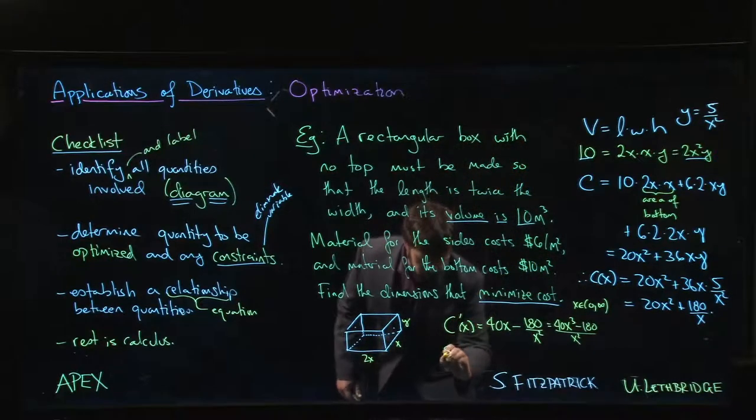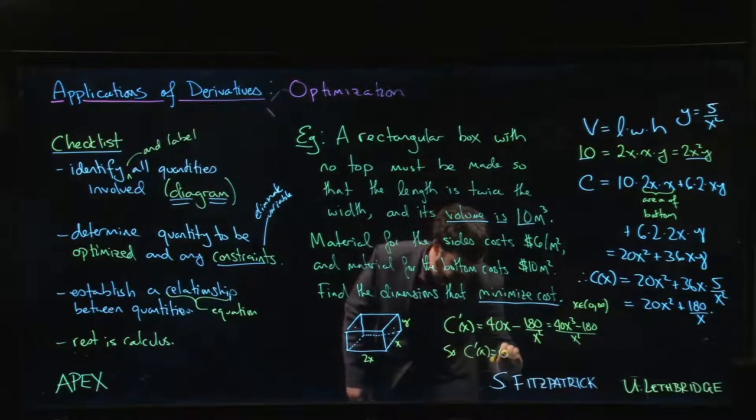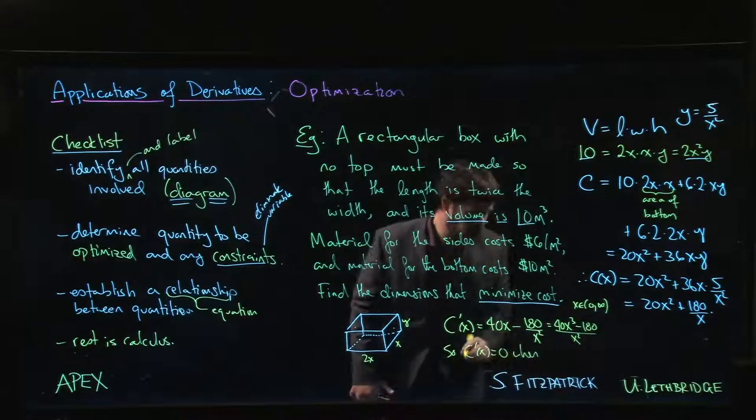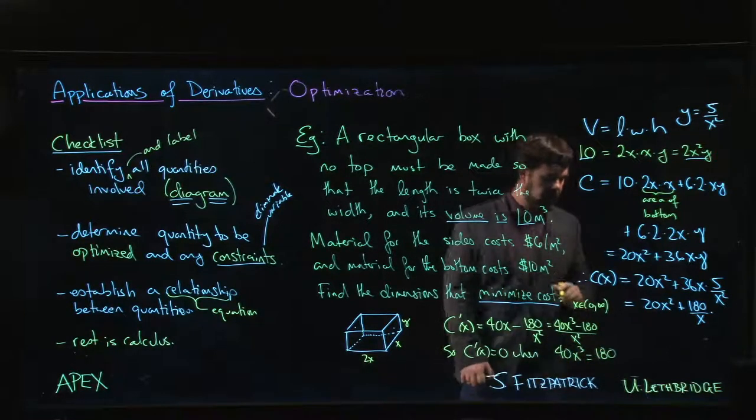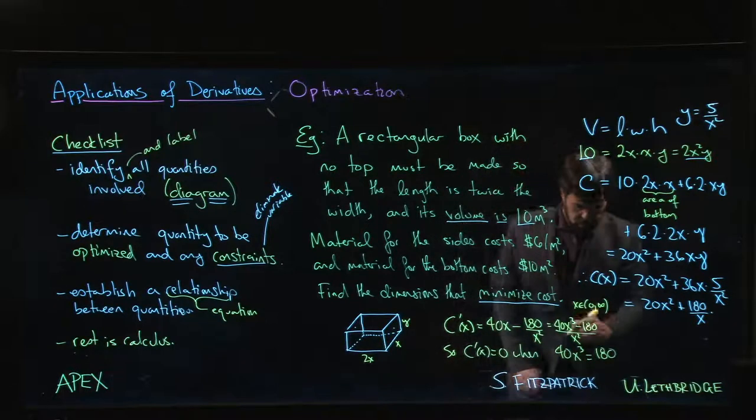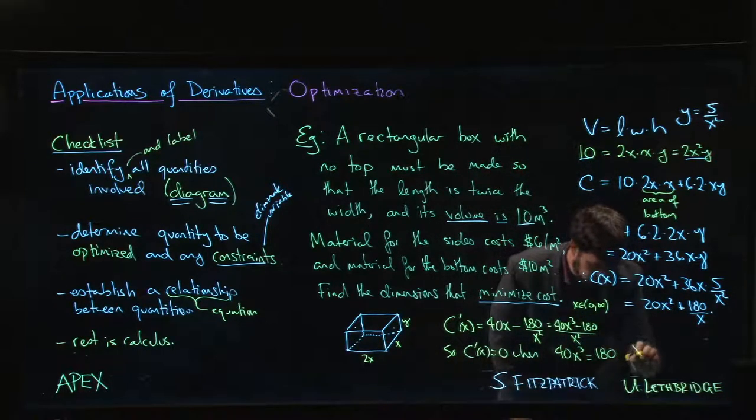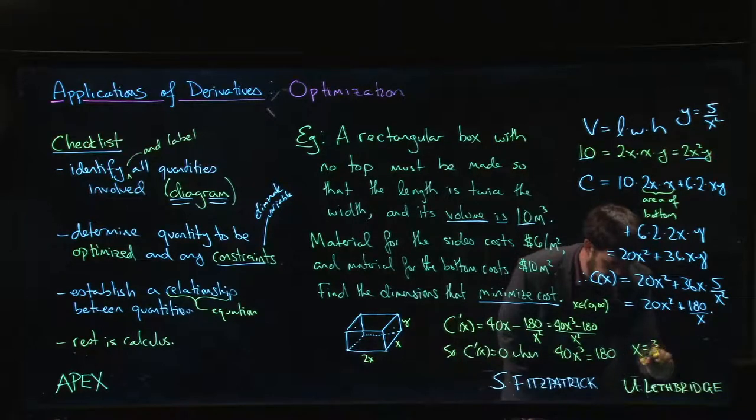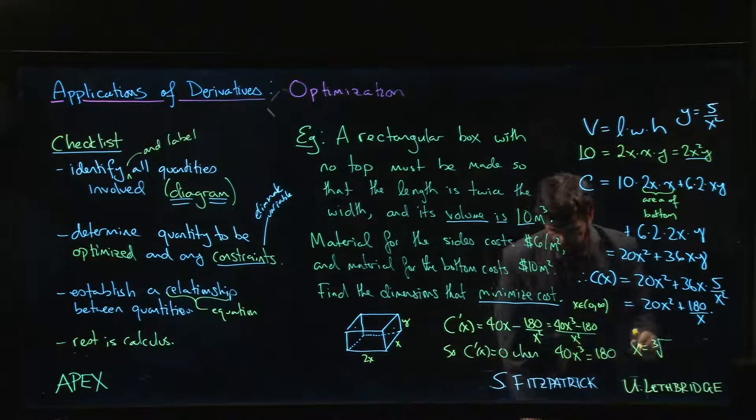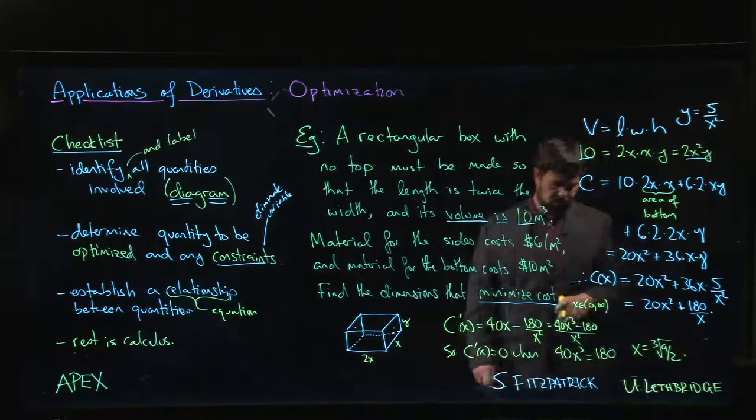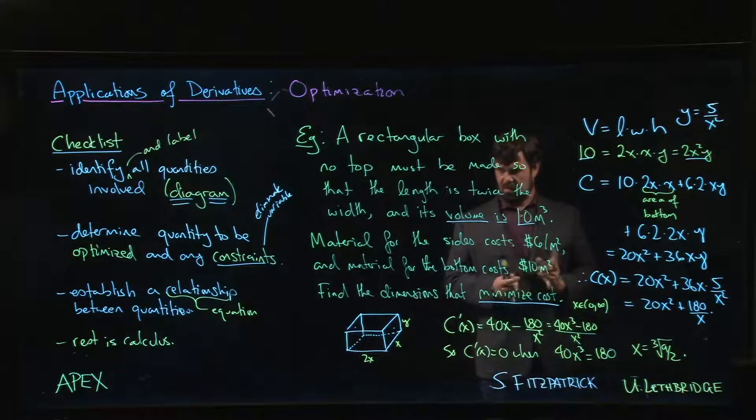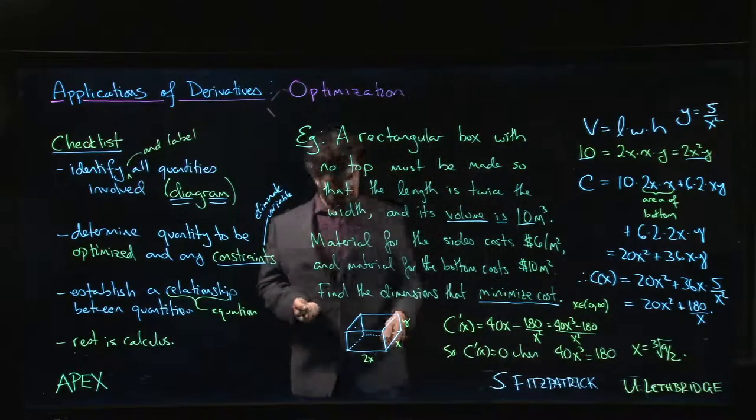And so C prime equals 0 when 40x cubed equals 180, or x is going to be the cube root of—well, I guess 18 over 4—9 over 2. Not a particularly convenient dimension, but we can work with it.